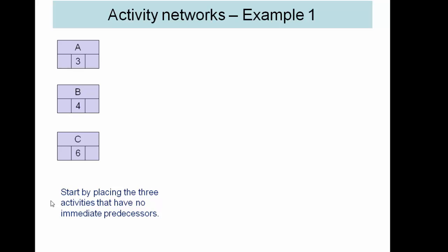So we have three activities that don't require anything to be completed. So for our activity network we start off with those and you'll see that in the middle here we have the duration of those tasks. As D depends on A we then draw a directed arc between A and D and you see here D is put with the duration in the middle there.